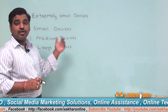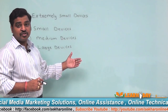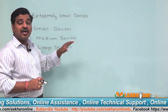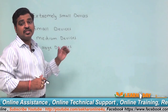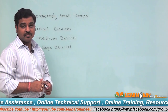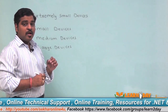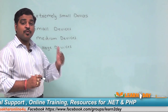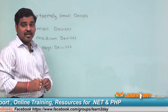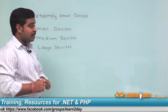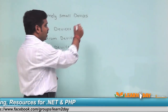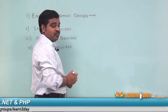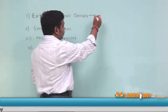Extremely small devices are mobiles, small devices are tablets, medium devices are normal desktops, and large devices are desktops with a larger screen size. Bootstrap provides some classes to identify the device and apply the appropriate styles.